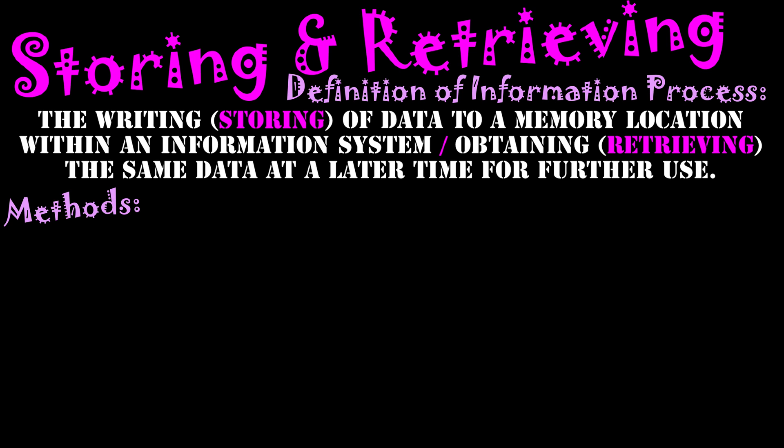So let's look at methods of how we actually do storing and retrieving within the information system. When you're working on data, that data is stored in RAM — the live data, everything you see on screen. If the power is pulled out, that data will be lost forever because RAM is volatile memory. So when you click save, the data moves from RAM into a location, most likely a hard disk drive or solid state drive.